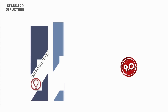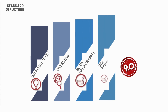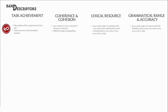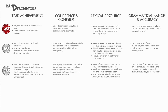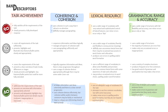Going further, this is the standard structure of a band 9.0 report. It includes an introduction, overview, body paragraph 1, and body paragraph 2. In addition, to get a band score of 9.0 we have to check the band descriptors for writing task 1 — we have to carefully consider task achievement, coherence and cohesion, lexical resource, and grammatical range and accuracy. Looking at the illustration, we need to compare the band descriptors of 6.0 and 9.0.